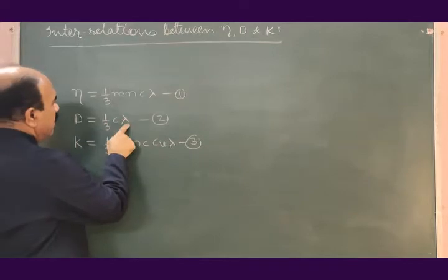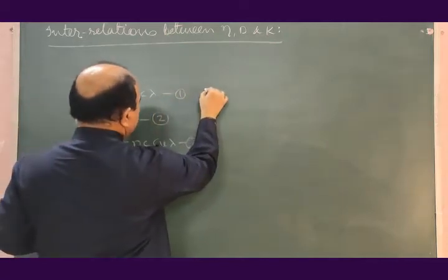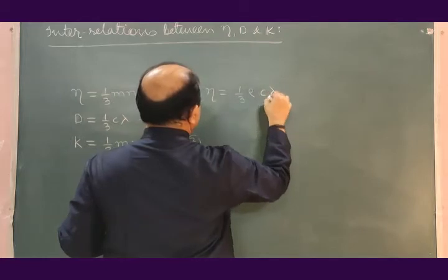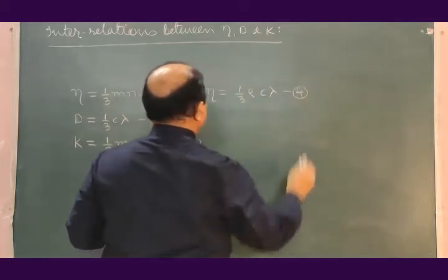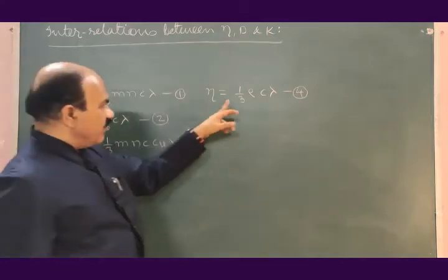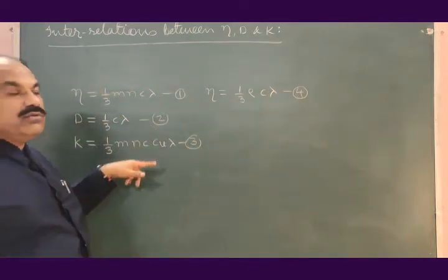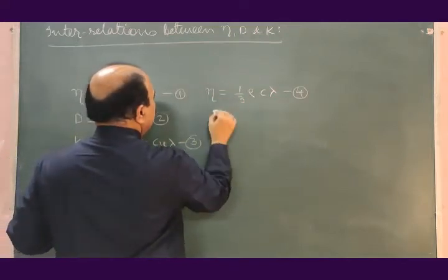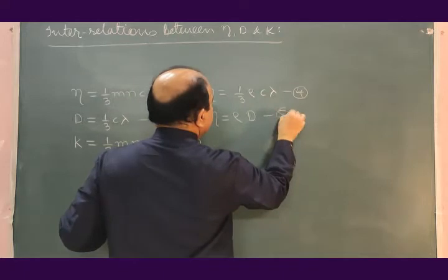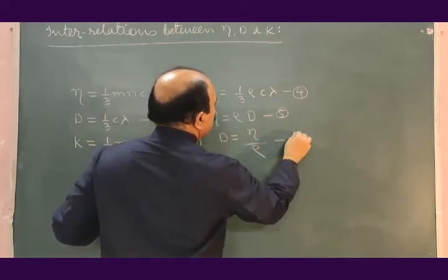D = (1/3) c·lambda. Equation 1 can be written further as eta = (1/3) rho·c·lambda. For this (1/3) c·lambda, if I put D from equation 2, eta becomes eta = rho·D, equation 5. Or D = eta / rho, equation 6.